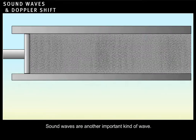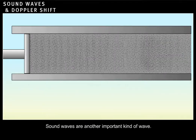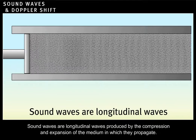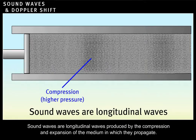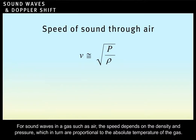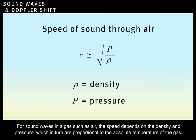Sound waves are another important kind of wave. Sound waves are longitudinal waves produced by the compression and expansion of the medium in which they propagate. Thus, their speed depends on the properties of the medium. For sound waves in a gas, such as air, the speed depends on the density and pressure, which in turn are proportional to the absolute temperature of the gas.